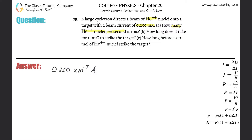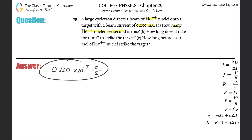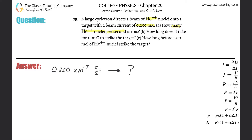Now we also have to remember that an amp is the same thing as saying the number of coulombs passing through a particular point per single second. So instead of using the term amps, I'm going to use the term coulombs per second. What I need to do is convert this into the desired unit: the number of helium nuclei per second.